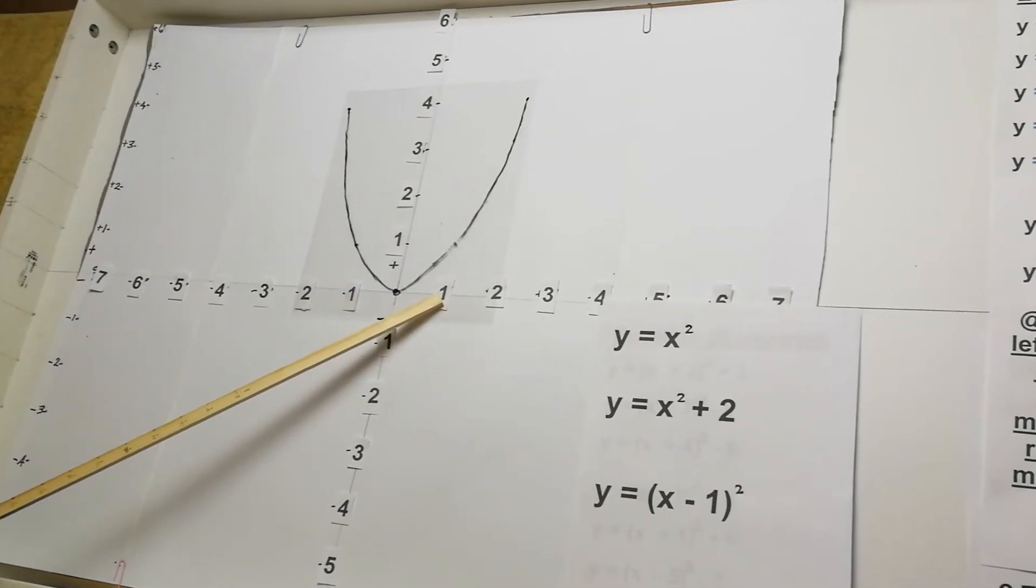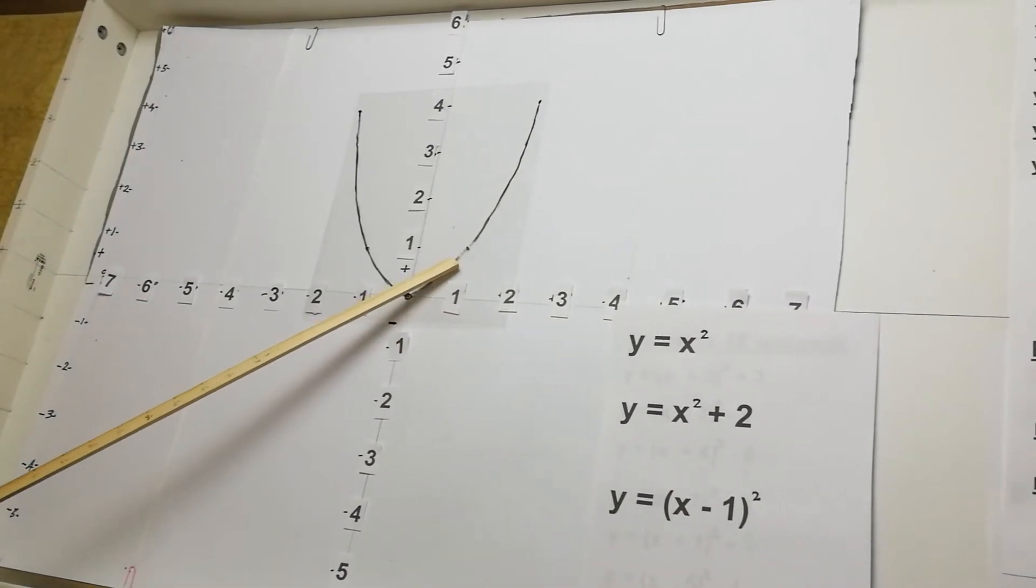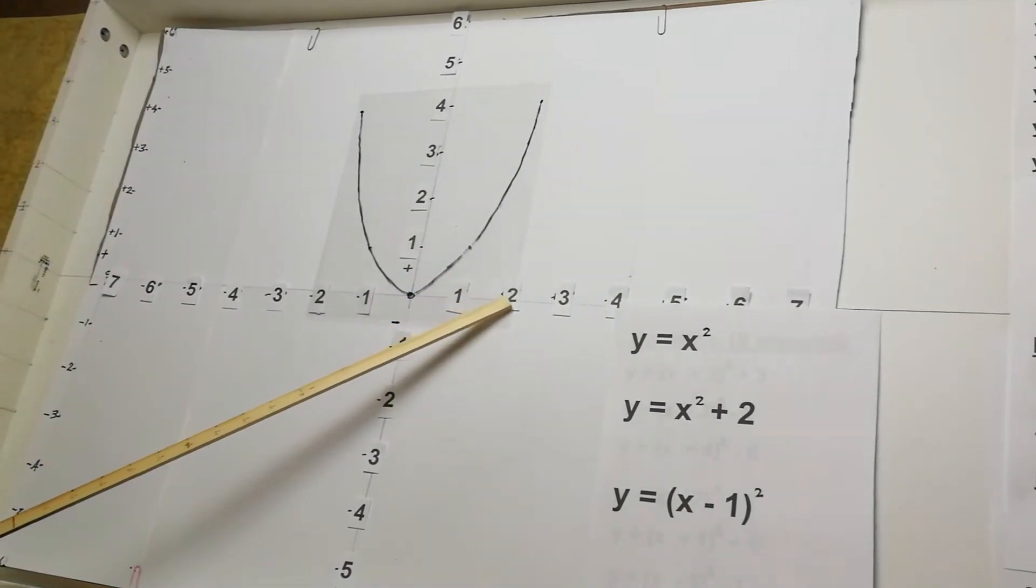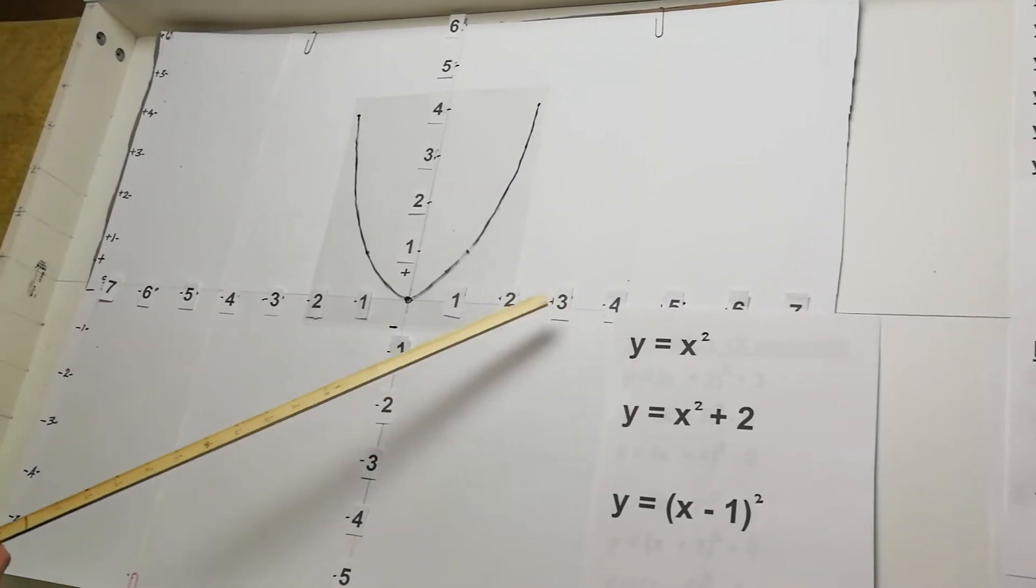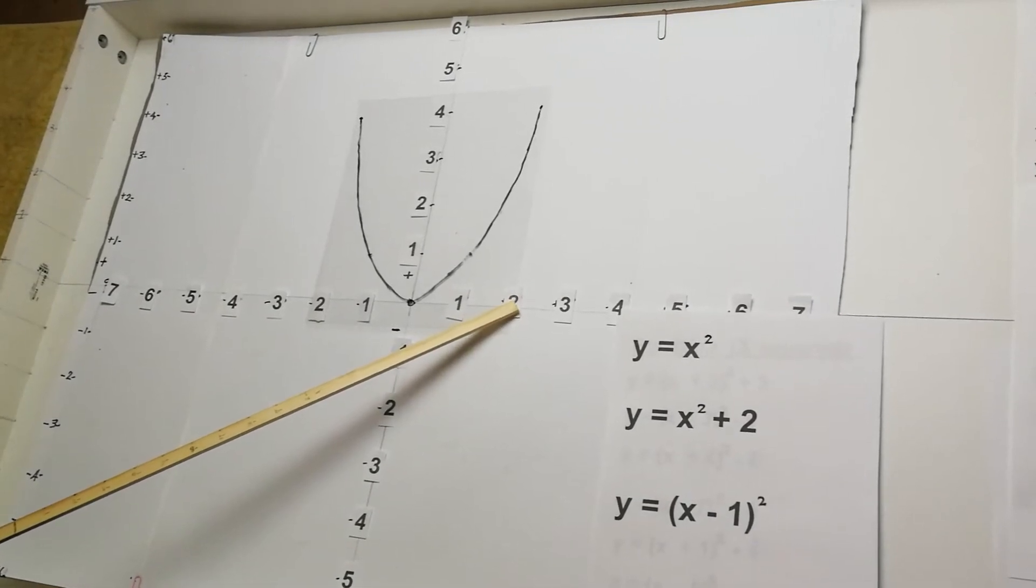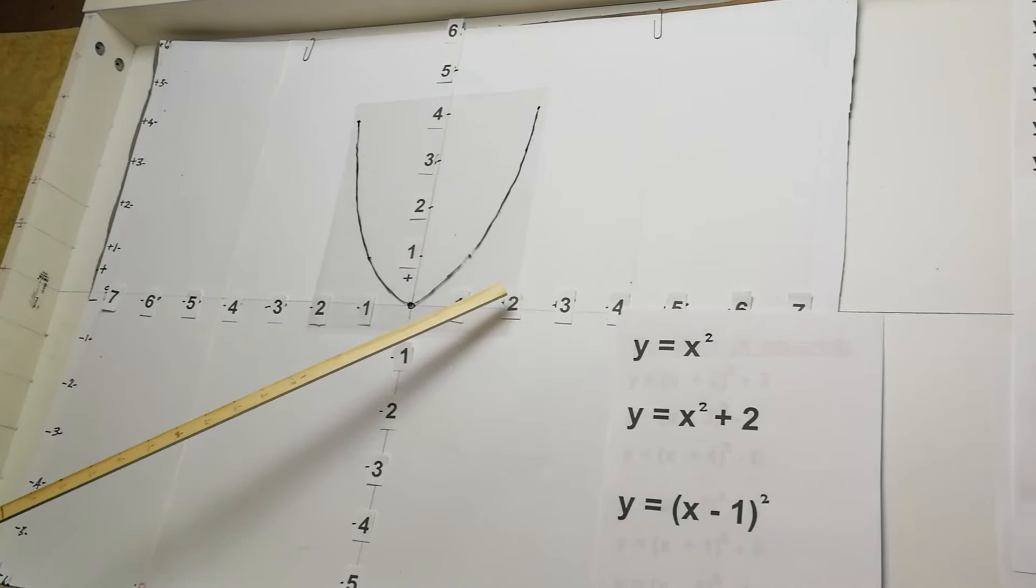When x is 1, to get y, if you square that, y is also 1. When x is 2, we square that, you know, because y is x squared. So when x is 2, if we square that, we get y, which is 4. So this explains this side.